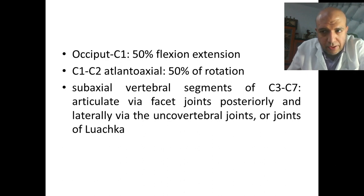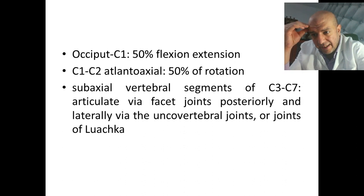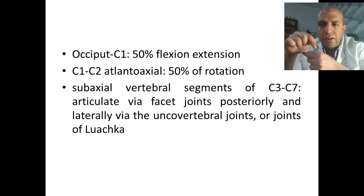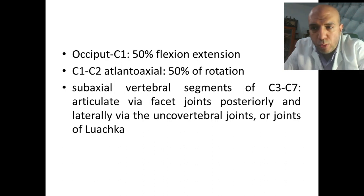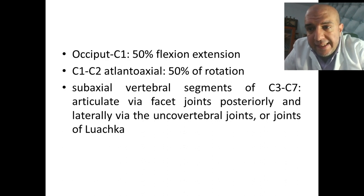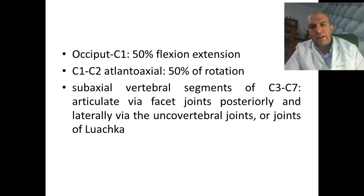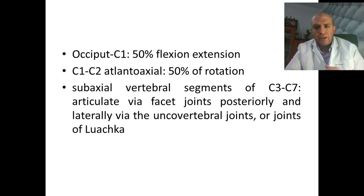The cervical spine starts with articulation between the occiput and C1. C1 is the atlas. At the sides of the foramen magnum, there are occipital condyles articulating with facets of C1. Then C1 and C2. From C3 downward is called the subaxial spine. C0, C1, C2 is the upper cervical — covered in a separate anatomy session inside cervical trauma. I will focus now on the subaxial anatomy from C3 to C7.